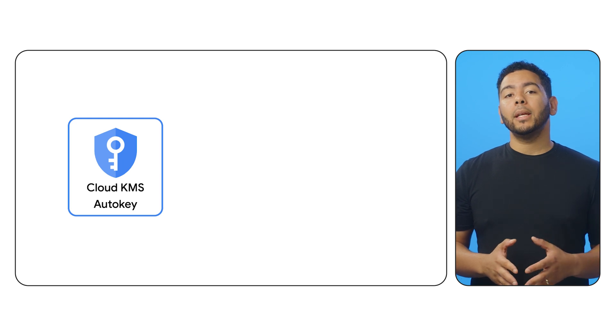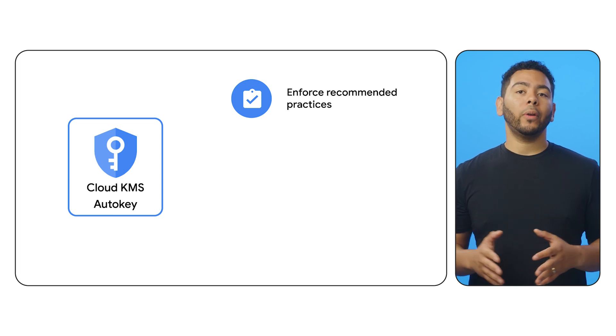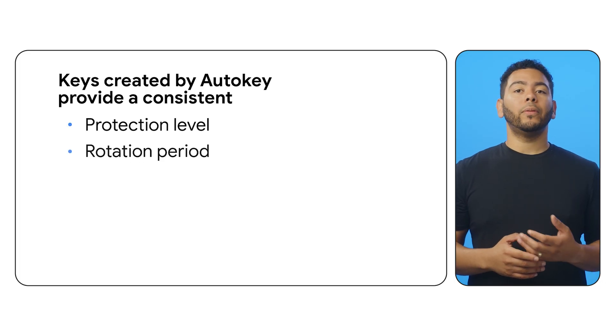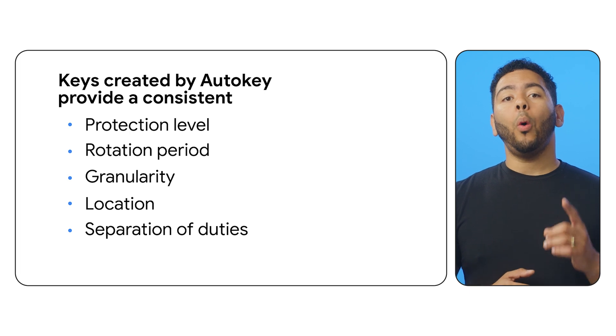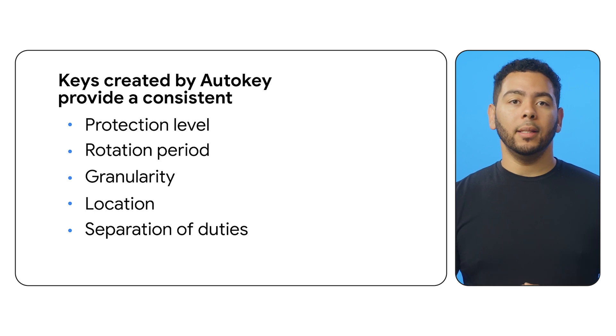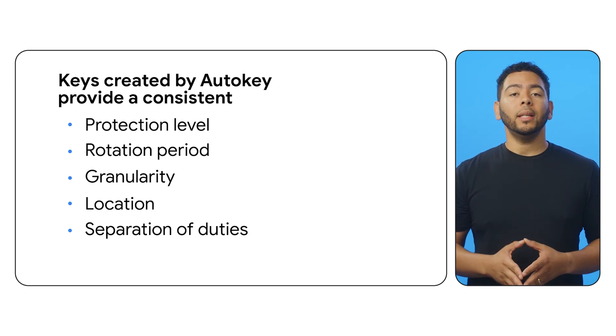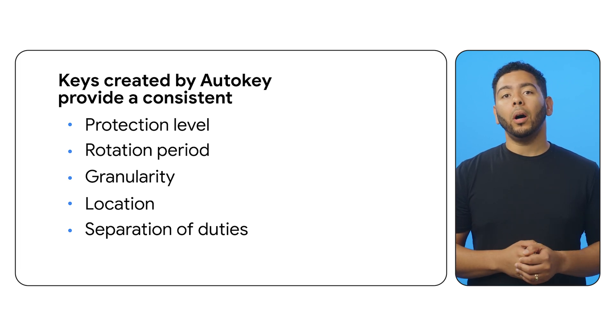Creating encryption keys with Cloud KMS AutoKey helps you accomplish three vital goals. When you request a key, the Cloud KMS AutoKey service account automatically generates keys in accordance with the recommendations embedded within Cloud KMS AutoKey. Specifically, this means that keys are created in Cloud HSM using FIPS 140-2 L3. Keys have a default rotation period set of one year, appropriate to the HSM protection level. AutoKey creates one key per resource, per project, and location, or enables use of default keys. And the identities that can use the key to encrypt and decrypt are separated from those that rotate, destroy, change the state, or otherwise manage the key.